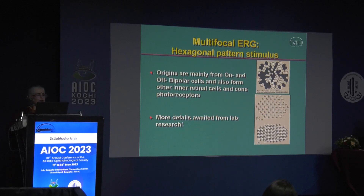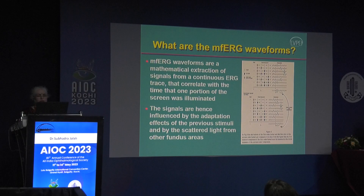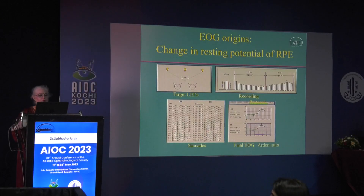It was initially thought that multifocal ERG signals come from cone photoreceptors, but animal studies by David Hood and colleagues showed that many of these signals actually come from the on and off bipolar cells — processed signals from the inner retina — with only a small percentage coming directly from rod and cone photoreceptors. More details are still awaited. The multifocal ERG captures various signals as the retina processes them based on prior stimulus conditions.